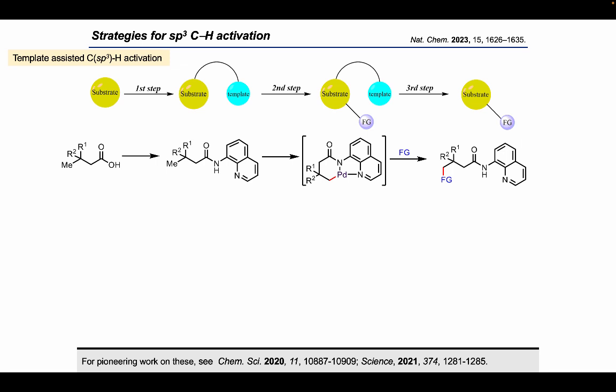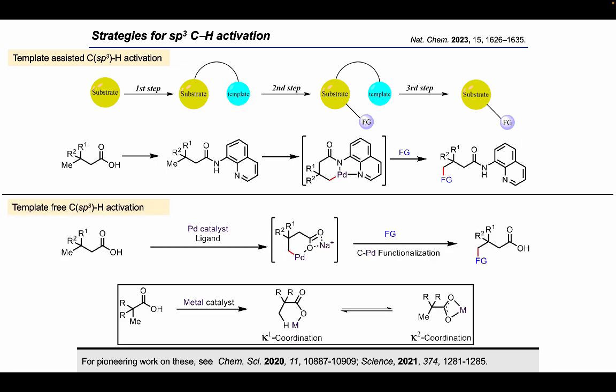In this approach, the template first needs to be added to the substrate, and then the template eventually helps in coordinating to a transition metal, and therefore in C–H activation, and finally in functionalization. And finally, the template needs to be removed from the substrate to get back the original substrate. Here is an example where an 8-aminoquinoline is attached with the aliphatic acid, and then after functionalization, this 8-aminoquinoline group needs to be finally removed to get back the original carboxylic acid.